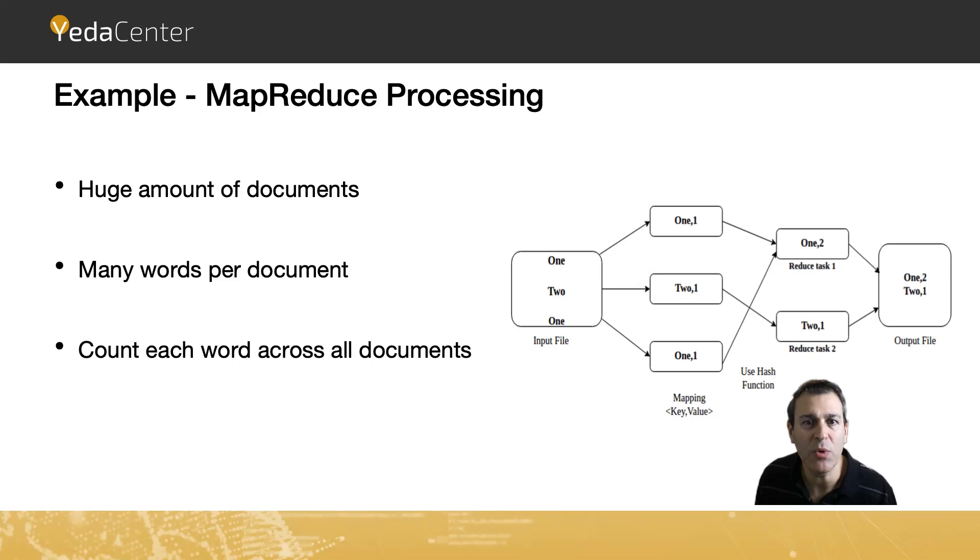Then the reduce task aggregates across all computers, combining all the data into one single key-value store result that will be the output file. This way we can achieve reasonable processing time by multiprocessing on multiple computers.